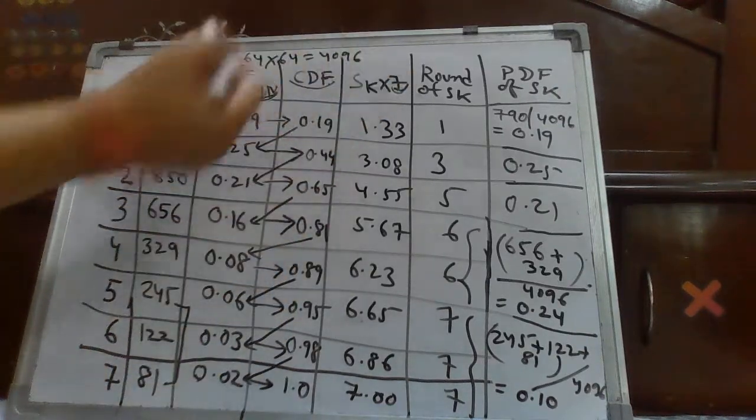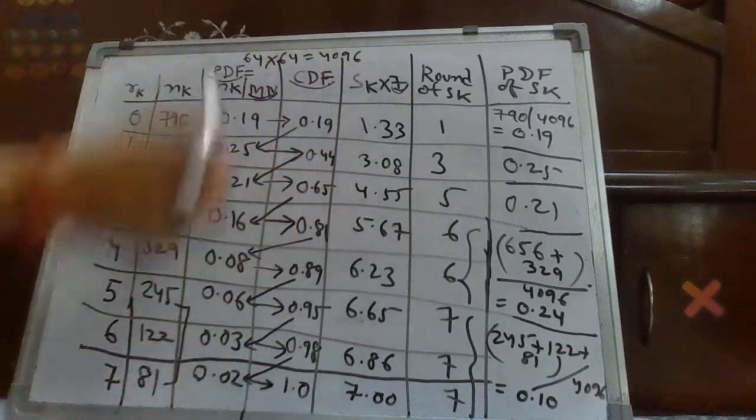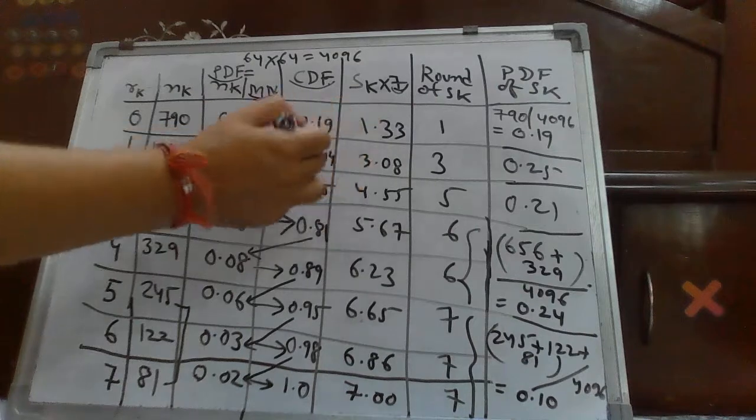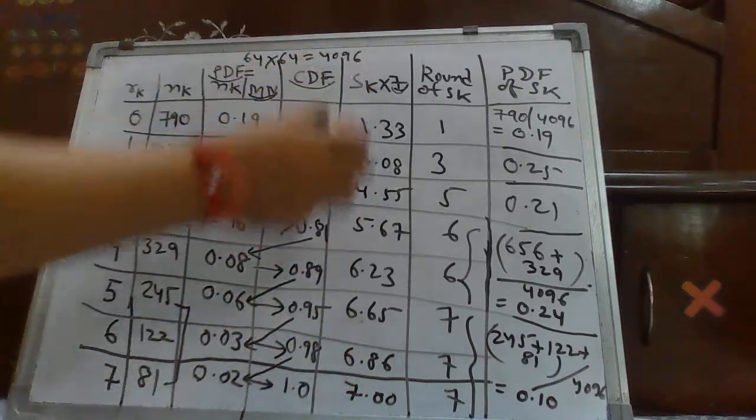In our question, it was given 3 bit. So, maximum representation label of 0 to L minus 1 is 7. So, we have multiplied it by 7. So, every column will now get multiplied by 7, and we will get this kind of value.